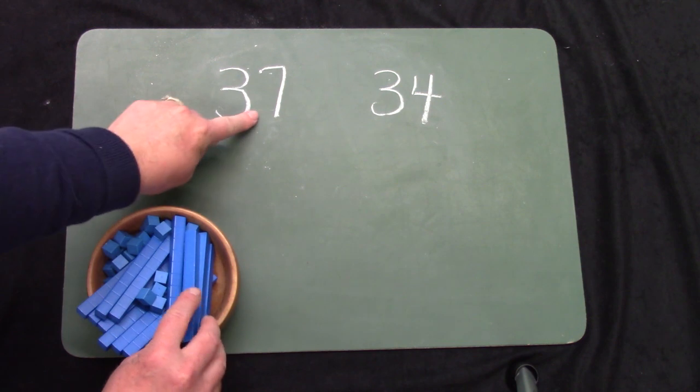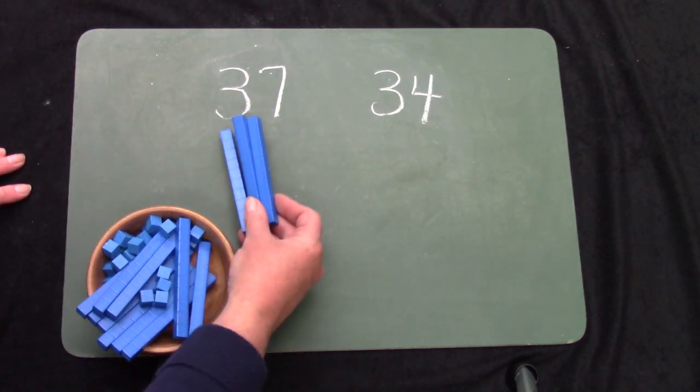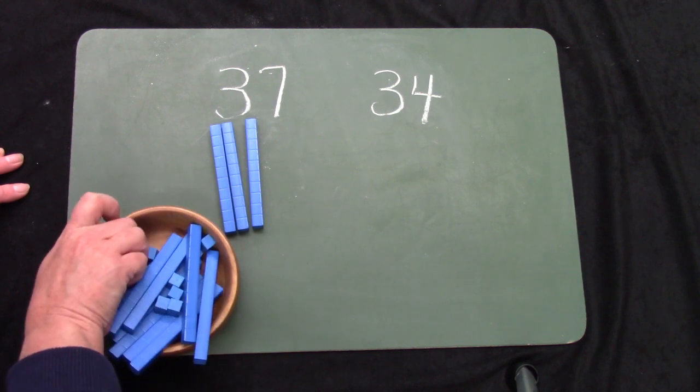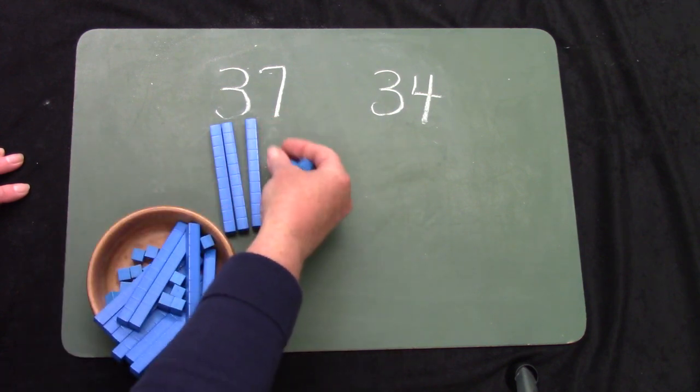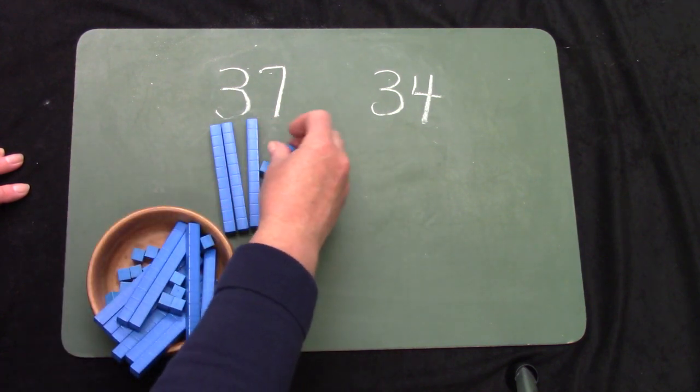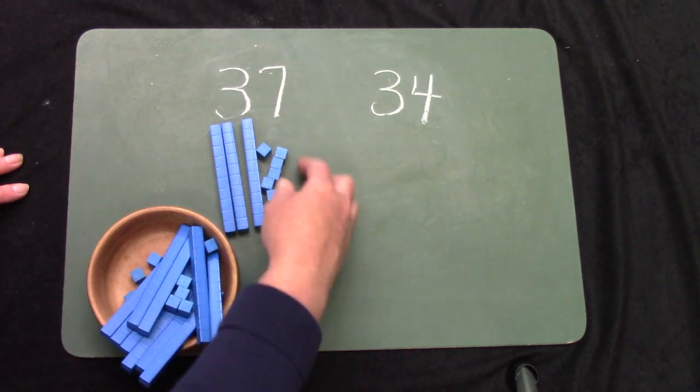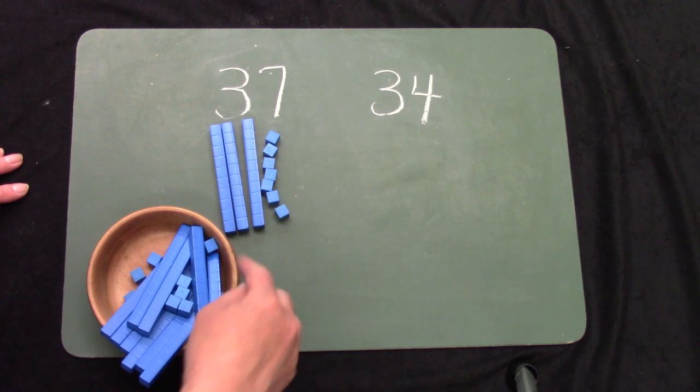You would need 10 of them in order to be as long as the 10 rod. So for 37, I would need three groups of 10. 10, 20, 30. And then I would need 7 more. 1, 2, 3, 4, 5, 6, 7. This is 37.